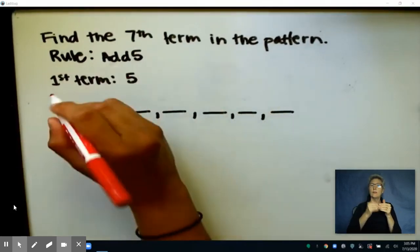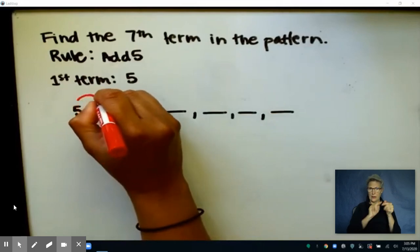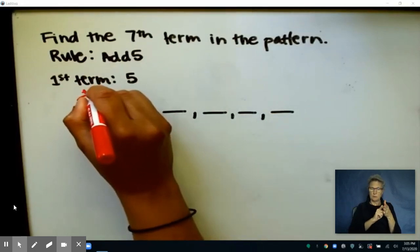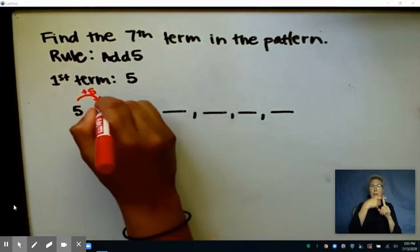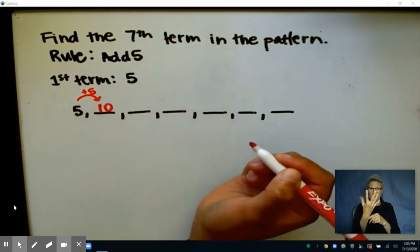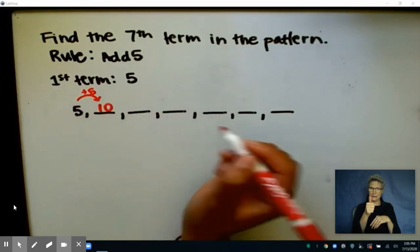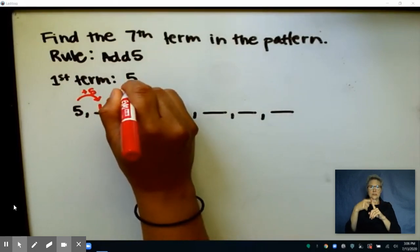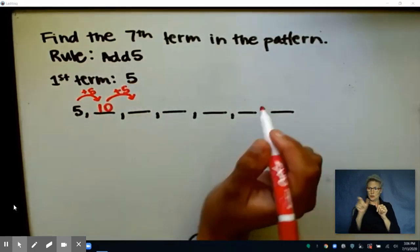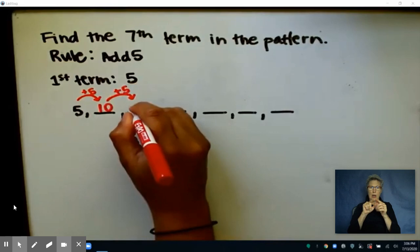So I know that from moving from my first term to my second term, I'm going to add 5, and if I do that, I know I will end up with the number 10, and I'm going to continue adding 5s to each term until I get to that seventh term in my sequence.